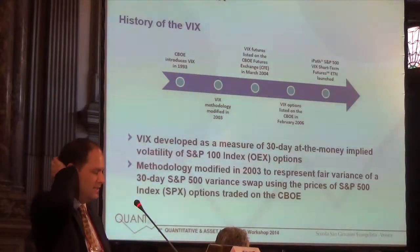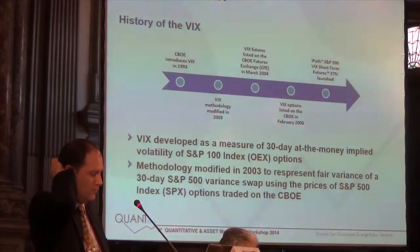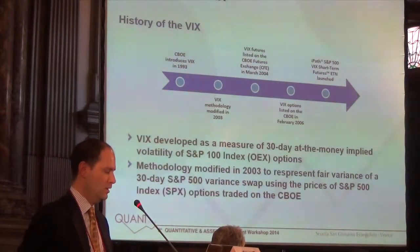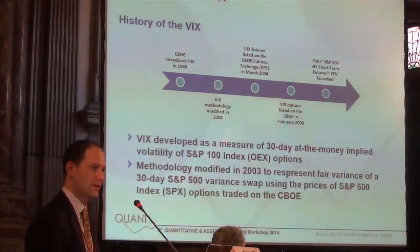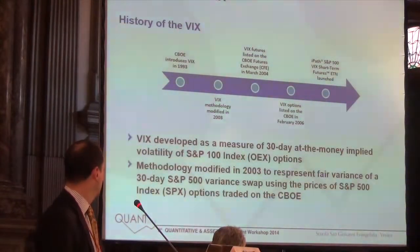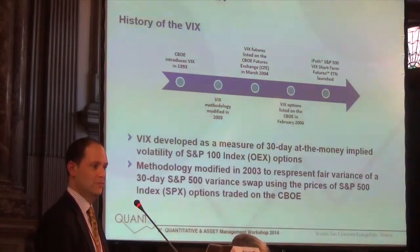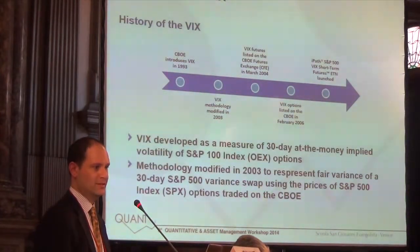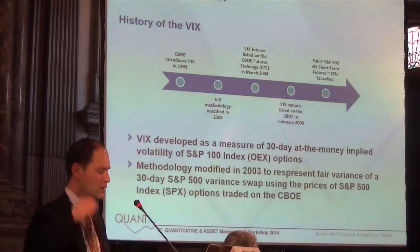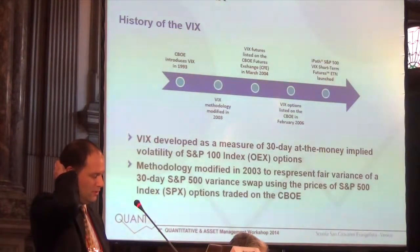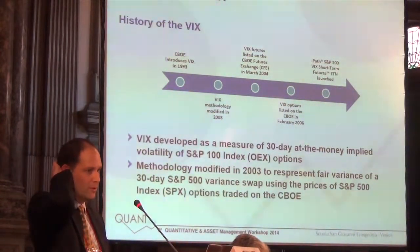The original VIX was launched in 1993 in coordination with Professor Bob Whaley, who was at Duke University. He took the OEX options, which were the most liquid index options traded at the time, and created at-the-money implied volatility by interpolating between an at-the-money call and an at-the-money put for two different maturities, arriving at a constant 30-day implied volatility. That was a model-dependent implied volatility, and since OEX options were American-style exercise at the time, we were using a binomial option pricing model.